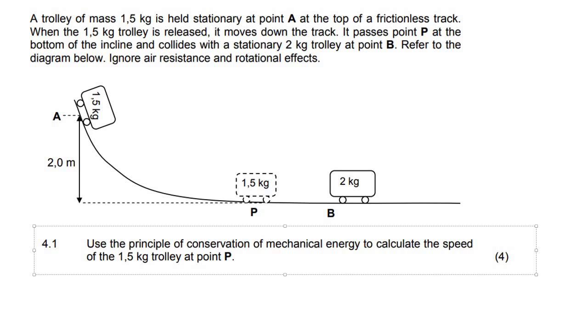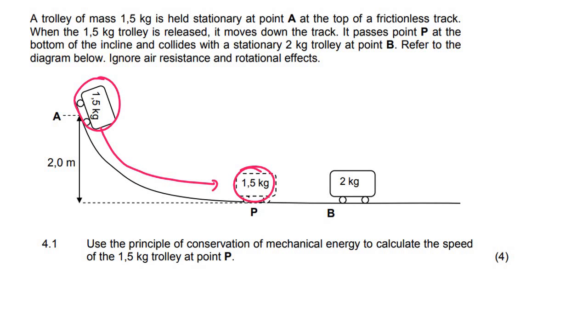In this question we have a 1.5 kilogram trolley which is stationary at A and it's going to move down a frictionless track. So here it is again, and then at the bottom of the slope it's going to combine or crash into that 2 kilogram object.